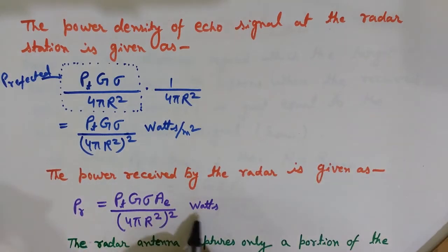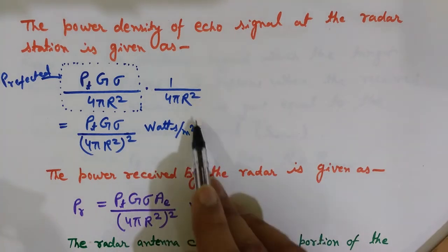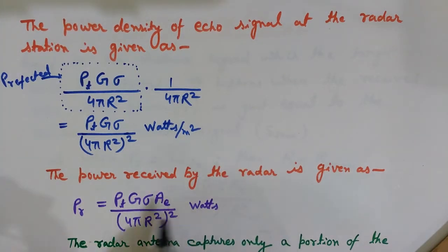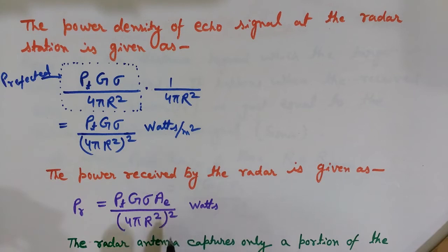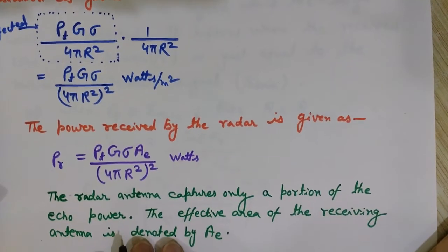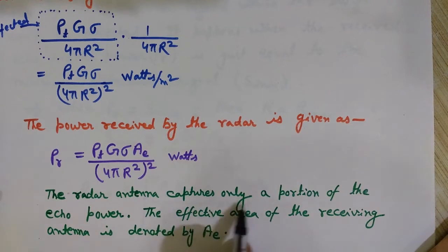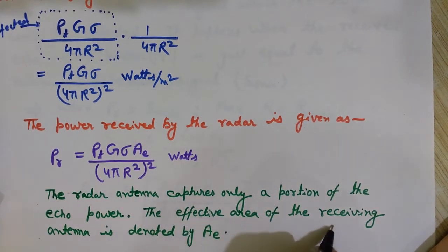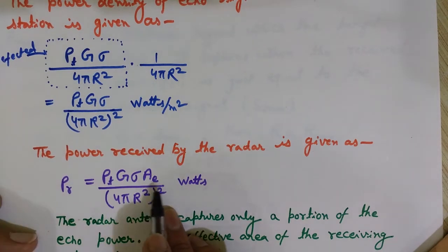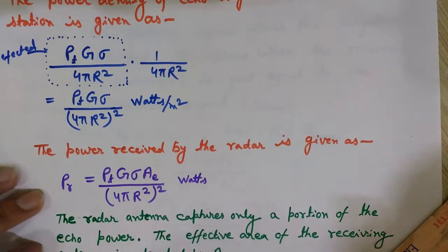To get the actual power received, we multiply the power density (watts per meter square) by the effective receiving area ae, converting to watts. The radar antenna captures only a portion of the echo power; ae is the effective area of the radar receiving antenna. Multiplying the full expression PT·G·sigma over (4πr²)² by ae gives PR, the power received by the radar antenna.